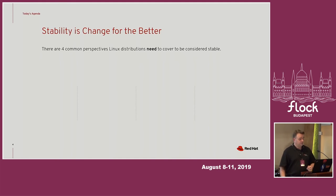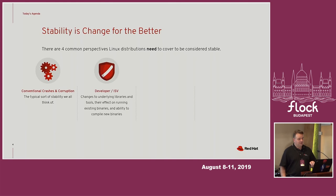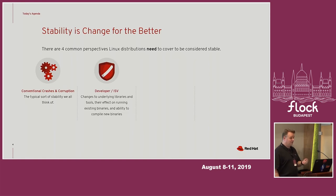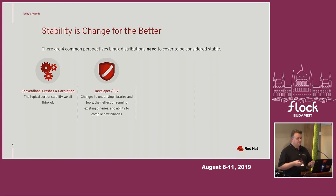We're going to cover four of them. There is, of course, crashes and corruption. But what really makes things unstable is what we do as developers to the software when we push out updates, when we make changes. That comes down to three major categories. The first is developer ISV stability. If you maintain a library — a shared library, a static library, anything that other people are relying on — and you make an incompatible update to it, then applications that are already built can crash.